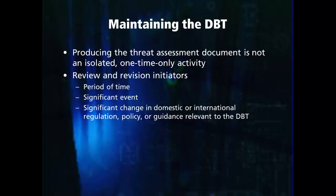Significant events may also prompt the competent authority to re-evaluate the current DBT. For example, the events of September 11th demonstrated a high level of financing, coordination, and a new capability — using a commercial airplane as a weapon — which posed a new threat. As a result, security measures for commercial air travel increased significantly to protect against this threat.